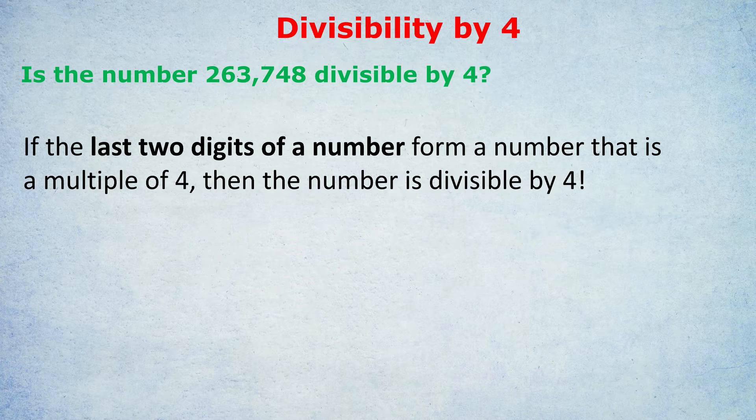To check if a number is divisible by 4, all you need to do is check whether the last two digits of that number form a number that is a multiple of 4. That kind of sounds complicated, but it really isn't. Just look at the last two numbers, the last two digits in that huge number, 263,748. What are the last two digits? 4 and 8. That forms the number 48. Is 48 a multiple of 4? Yes, 48 is a multiple of 4. And therefore, that entire number is divisible by 4.